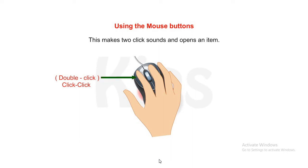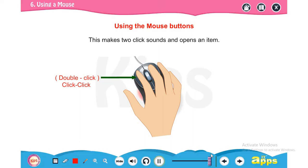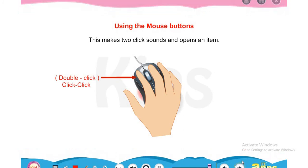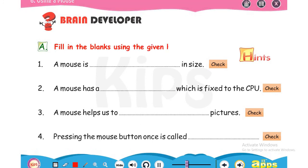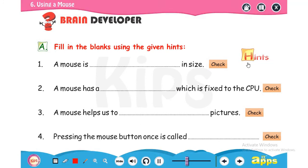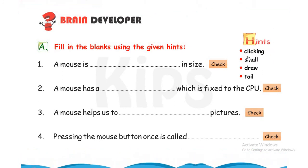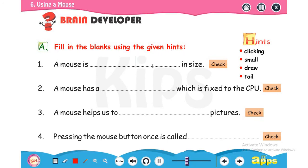Okay students, now we discuss question-answer which is on page number forty-one. Fill in the blanks using the given hints. So there are some hints given to the right side. First question, a mouse is dashed in size. So answer is mouse is small in size.